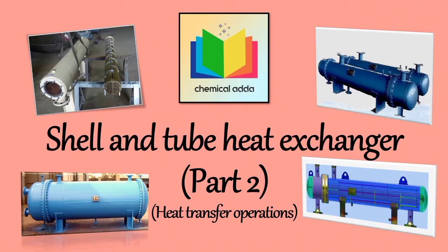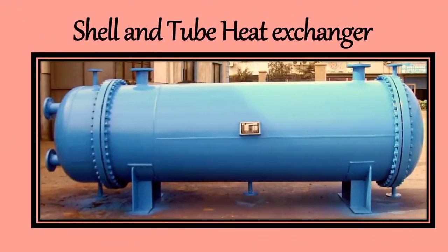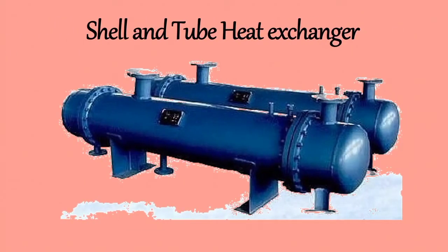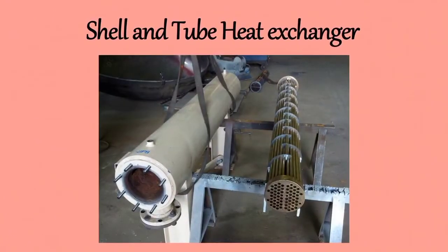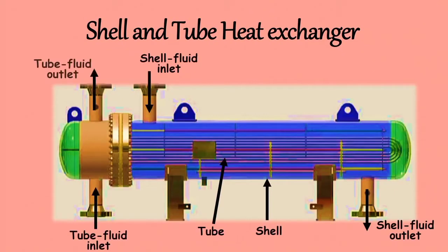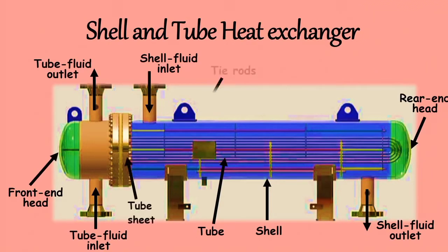As we know, shell and tube heat exchanger is a tubular type of heat exchanger. It usually requires less materials for construction. Hence shell and tube exchanger is used when double pipe exchangers do not provide sufficient area for heat transfer. The major components of this exchanger are: Shell, Tube, Front end head, Rear end head, Tube sheet, Tie rods, and Baffles. Let's see these components one by one.